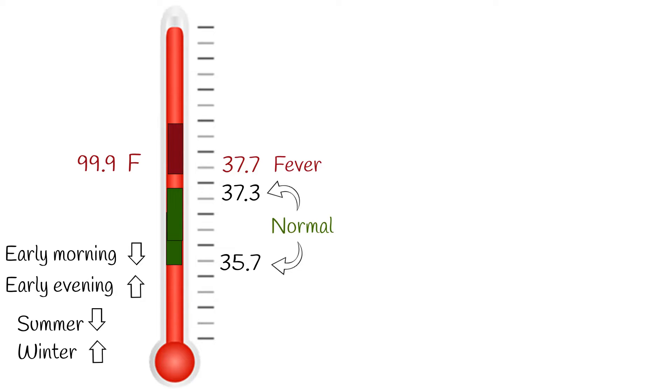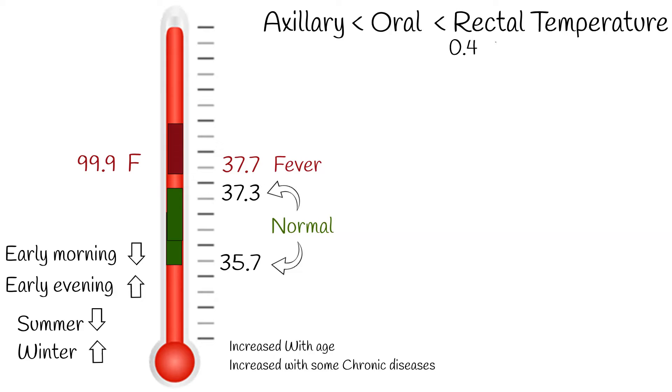Core body temperature slightly lowers with age and increases with comorbid conditions like cancer and some chronic diseases. Rectal temperature is generally higher than oral temperature. The difference is around 0.4 degrees.